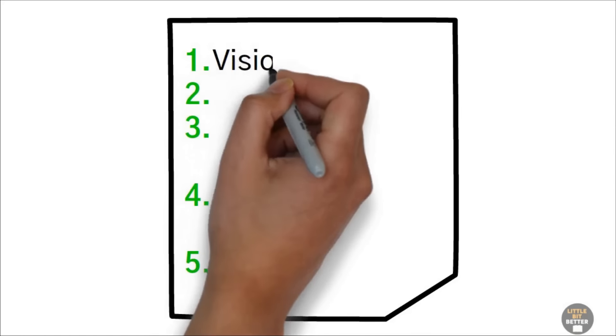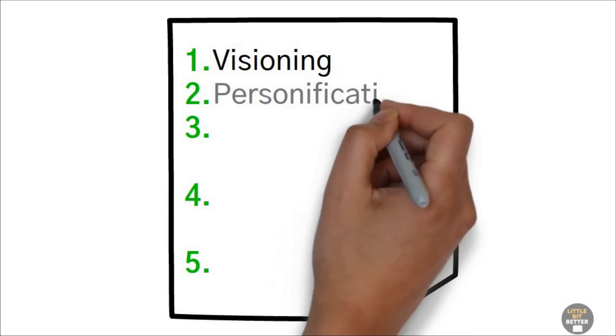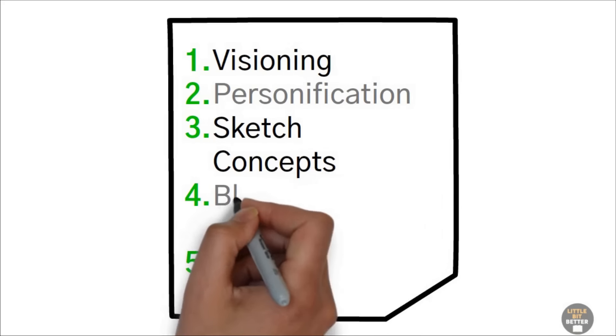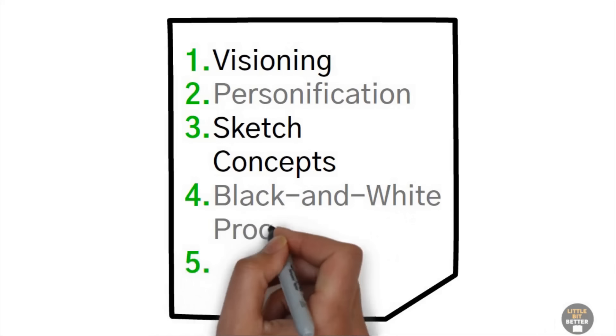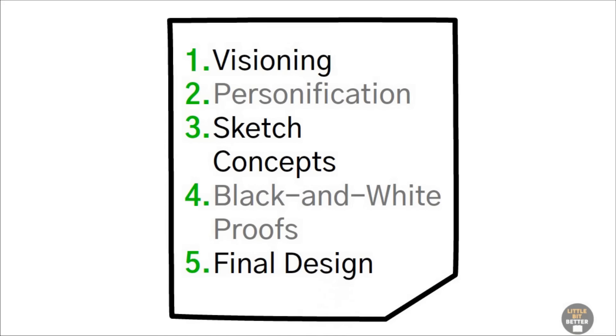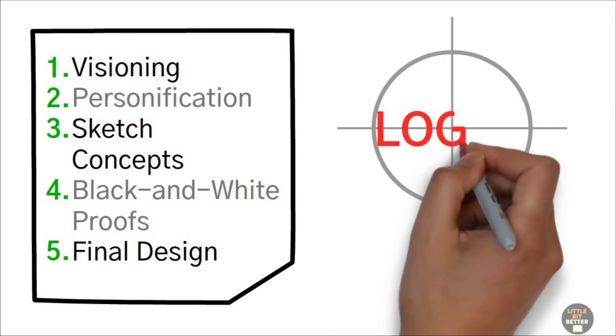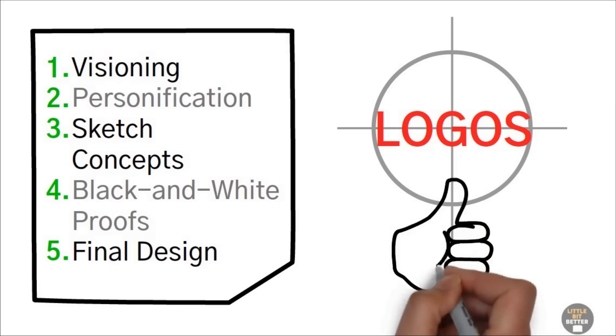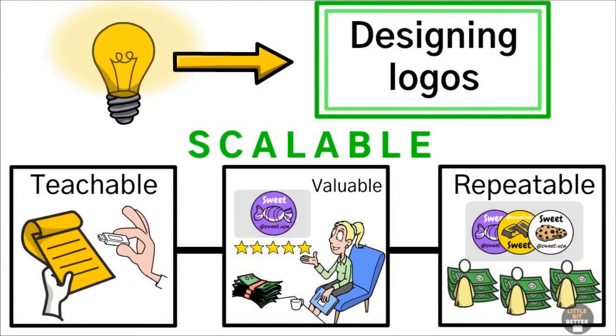Ted asked Alex to explain the system. And in the end, they came up with a five-step logo design process. Step one, visioning. Step two, personification. Step three, sketch concepts. Step four, black and white proofs. Step five, final design. Ted recommended Alex to focus his business only on logos. Logos were something Alex's company was good at. Plus it was scalable.